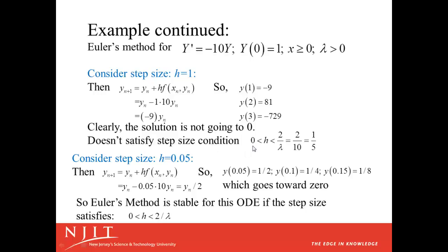We said that the stability condition was zero is less than h less than two over lambda. Lambda is ten, so we need a step size that's less than one over five. h equal one is way bigger than one over five and it led to real problems. Let's consider an appropriate step size. h is one over twenty or 0.05. Then the method becomes the new value is the old value minus 0.05 times ten y_n. This just gives us y_n minus a half y_n or y_n over two. The new value is a half of the old value. So y of 0.05 would be a half times one. Y of 0.1 would be a quarter. Y of 0.15 would be one eighth and so on. Those values are clearly going towards zero. So we see that Euler's method was stable for this ODE. If h was bigger than one fifth we had a problem. If h was smaller than one fifth things worked out okay.